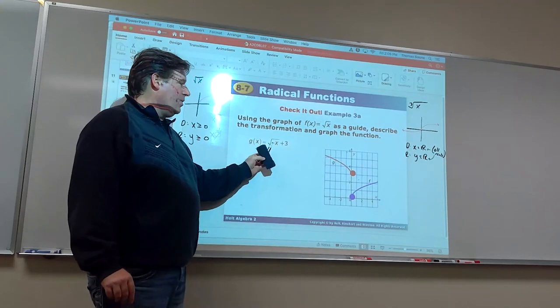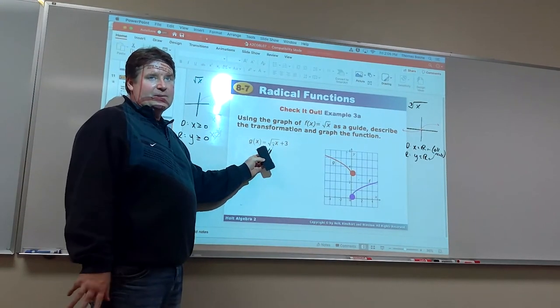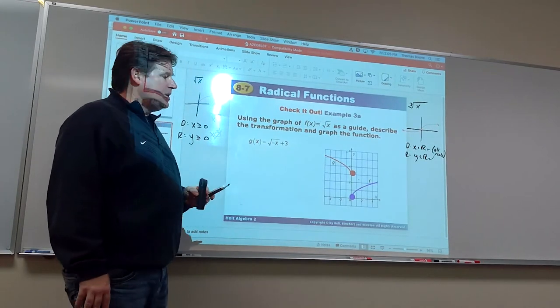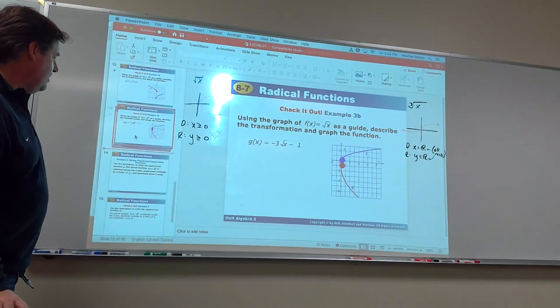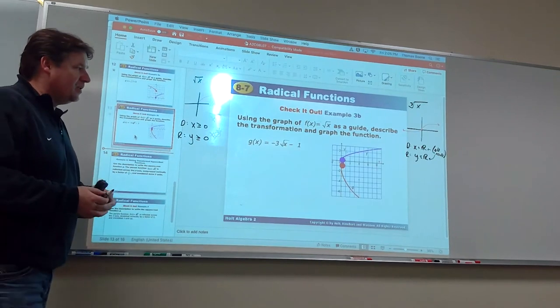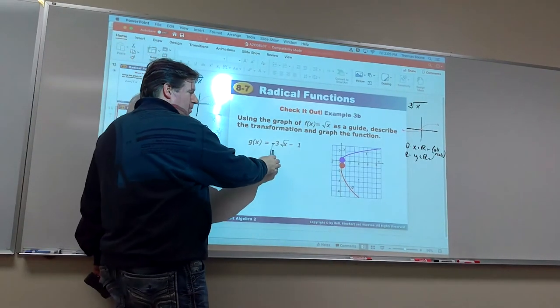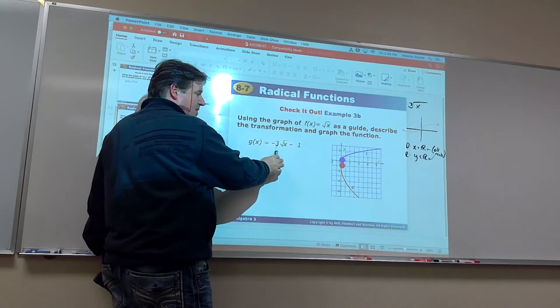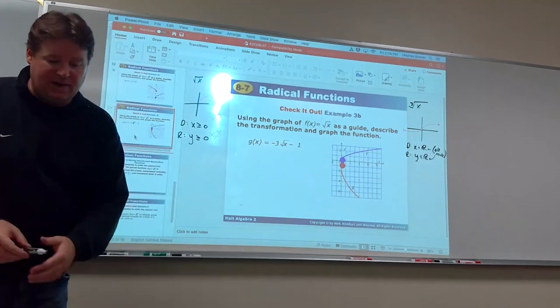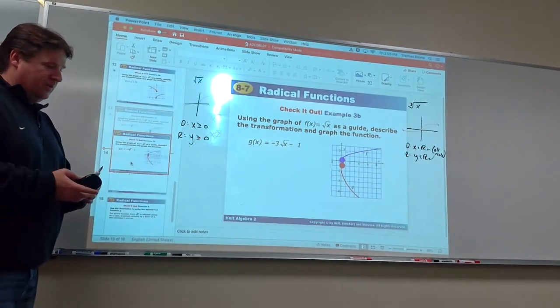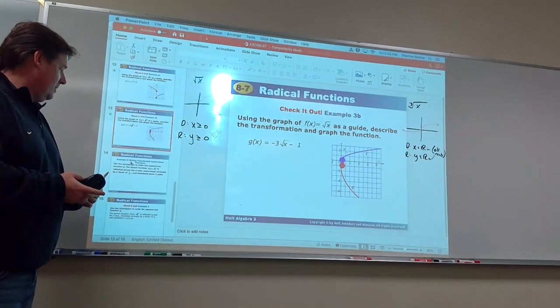All right. Now, if the negative is underneath the radical, that reflects it across the y-axis. And then plus 3 moves it up 3. All right. And then this one's kind of a big kahuna here. Lots of them. Now, the negative out here does a reflection across the x. This is a vertical stretch of 3. And that moves it down 1. So, we want to be able to identify and describe all of the transformations that are being done.